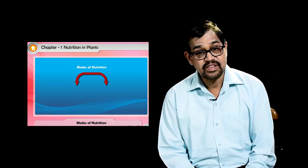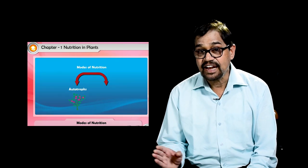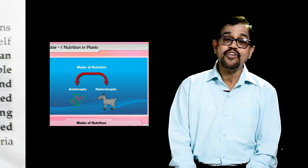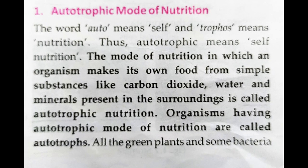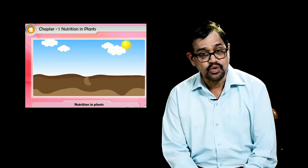Now how do these plants synthesize food? There are basically two ways nutrition occurs in plants: autotrophic and heterotrophic. Autotrophic mode of nutrition is the mode in which an organism makes its own food from simple substances like carbon dioxide, water, and minerals present in the surroundings. Organisms having this mode of nutrition are called autotrophs.